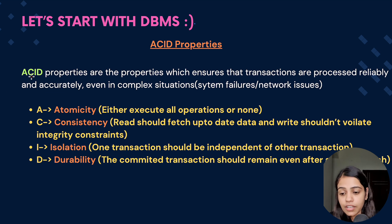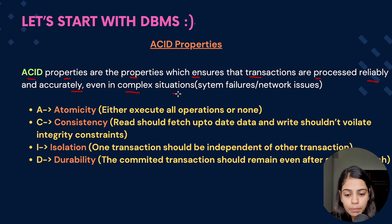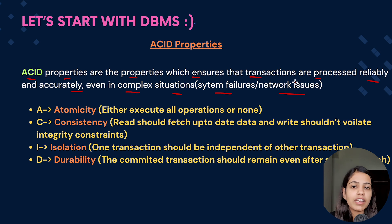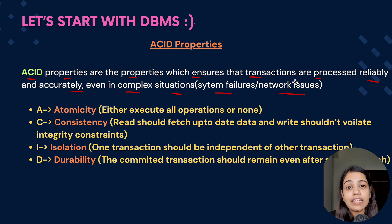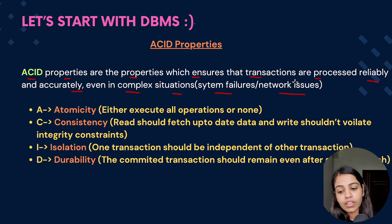What are these ACID properties? ACID properties are the properties which ensure that the transactions are processed reliably and accurately, even in complex situations like system failures or network issues. If we encounter any complex situations like system failures or network issues while having a transaction, it makes sure that the transaction is accurate and reliable.